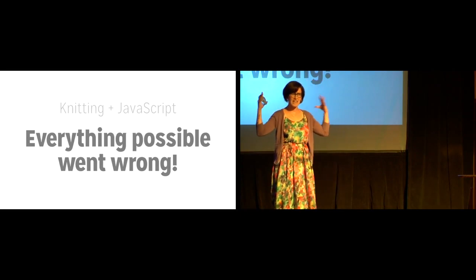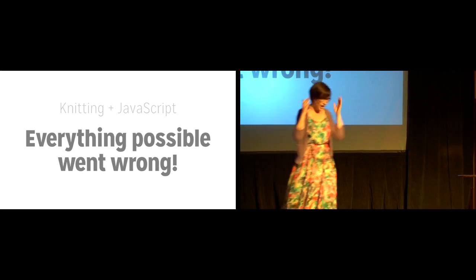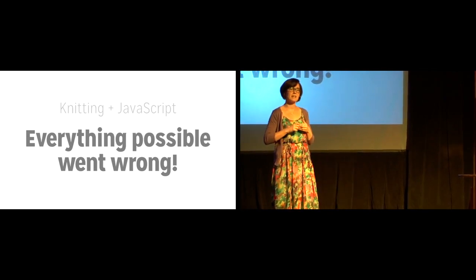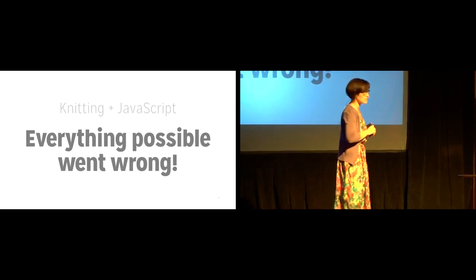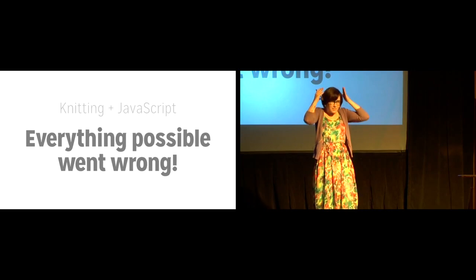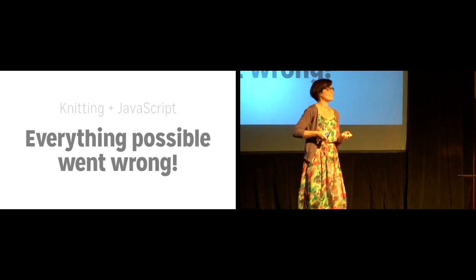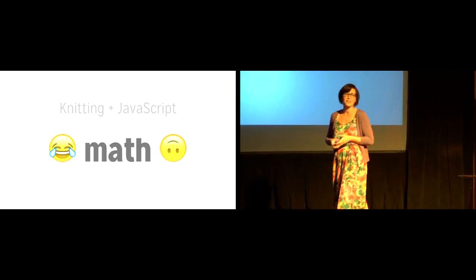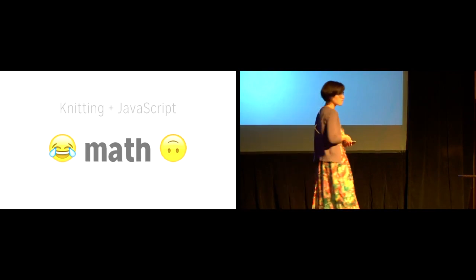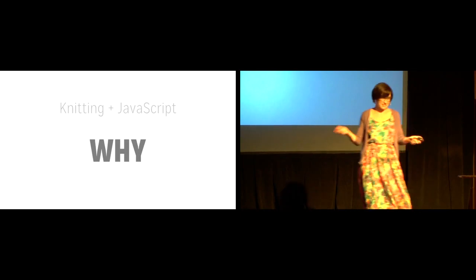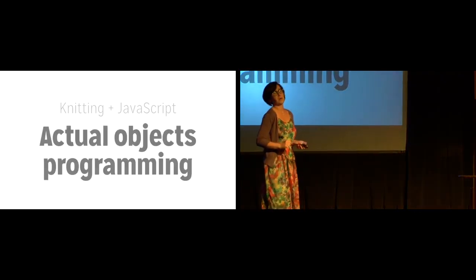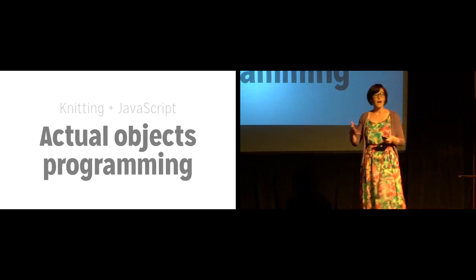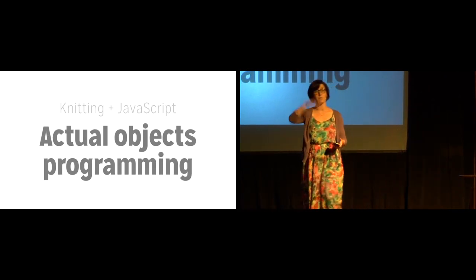Everything went wrong. I was generating things for the wrong sizes for the wrong people. Another title could have been 'LOL Math' — because we've all been there. And 'Actual Objects Programming' is another way to think about this. We often talk about object-oriented programming, but I'm talking about programming actual objects. Programming to make an actual physical thing. All these abstract OO concepts I thought I understood — they don't matter. Who gives a shit what the code looks like? Unless the code is making the thing look right. Always pick the thing.